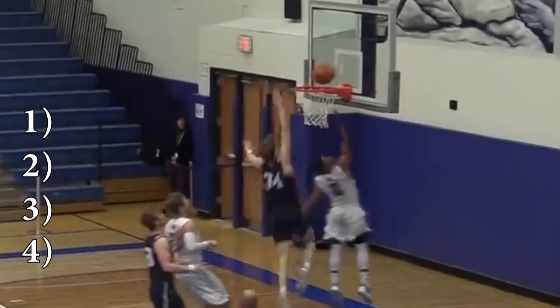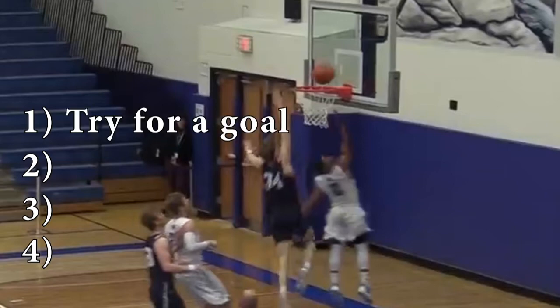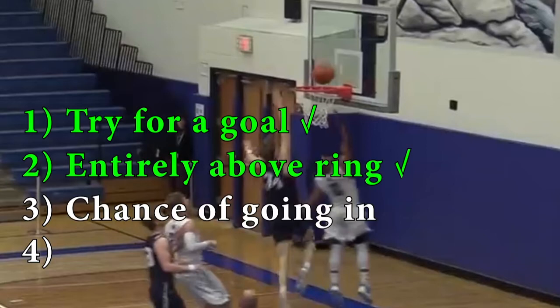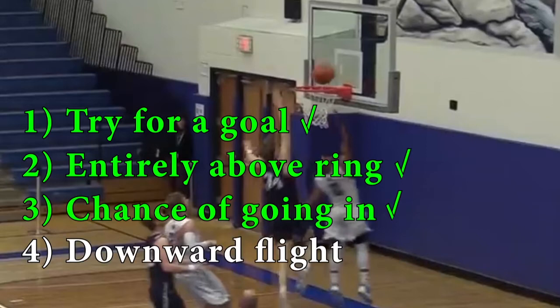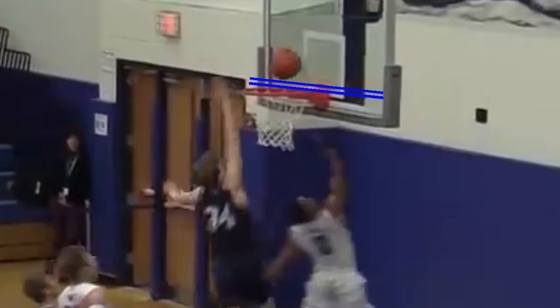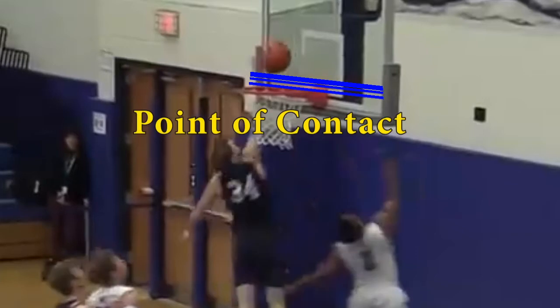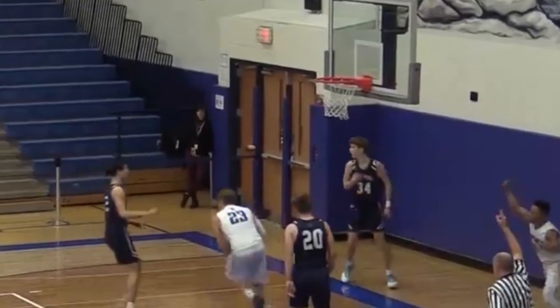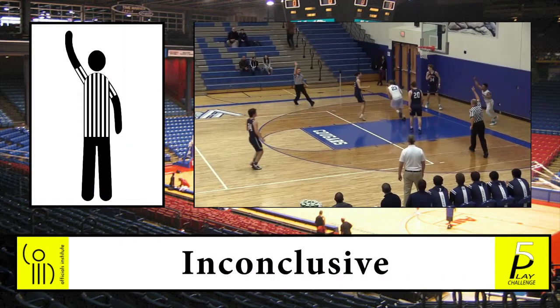Four factors must be met to be considered goal tending. It must be a try for a goal — check. It has to be entirely above the ring — which it is. There has to be a possibility of it entering the basket — probably. And it needs to be on a downward flight — was it? Marking the height of the ball frame by frame, it is still too close to know for sure. The correct ruling on this play: inconclusive.